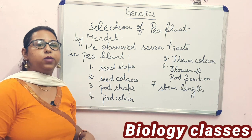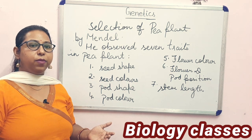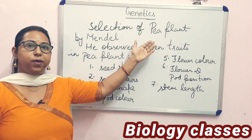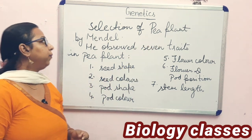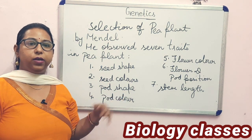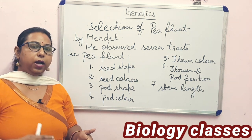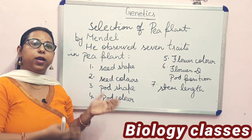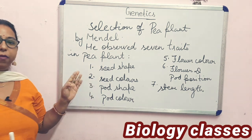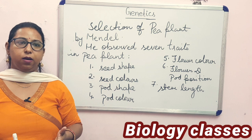Now I will start with Mendel's experiment. As you know, Mendel experimented on the pea plant, scientific name Pisum sativum. In the Pisum sativum, he basically observed seven contrasting characters. Let us first discuss those seven characters which Mendel observed in the pea plant.